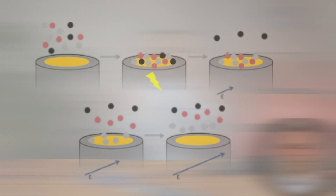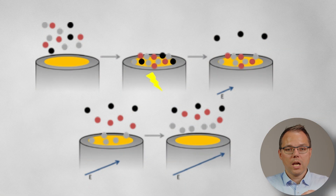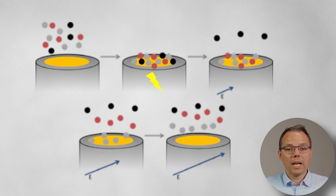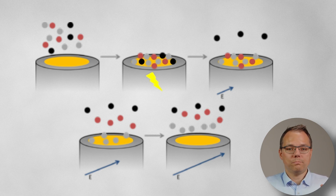Let's first talk about what stripping voltammetry is. In general, stripping voltammetry means that you're depositing some material on your electrode and then, via voltammetry, removing that layer again from your electrode. You detect the removal and use that for quantification or qualitative analysis.